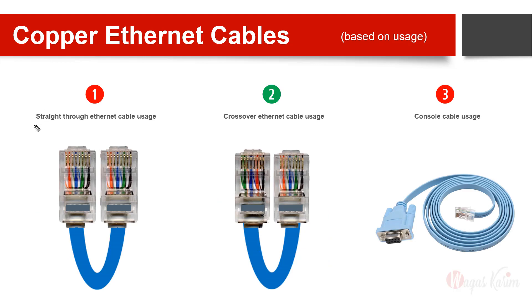Let me show you how they look physically. A straight-through cable has all cables mapped one to one. The RJ45 connector has eight small cables inside. Pin 1 maps to pin 1, pin 2 maps to pin 2, pin 3 maps to pin 3 — this is called straight, meaning one-to-one straight mapping.